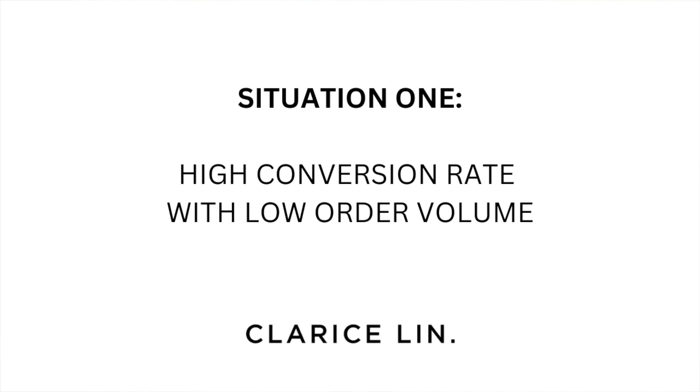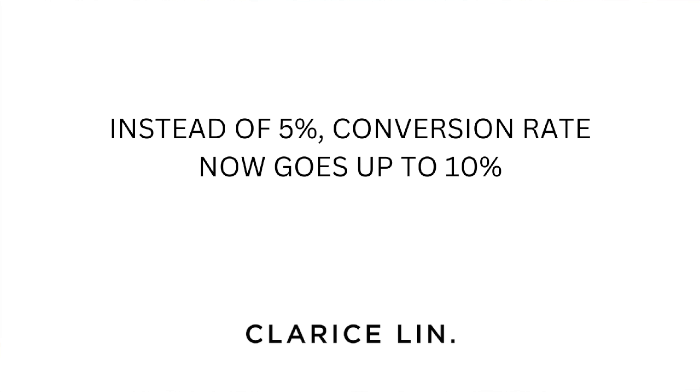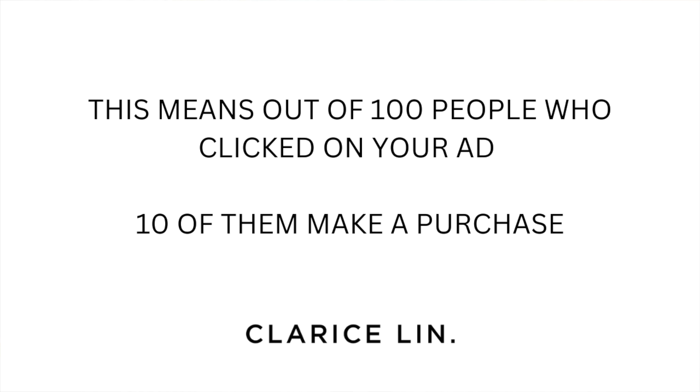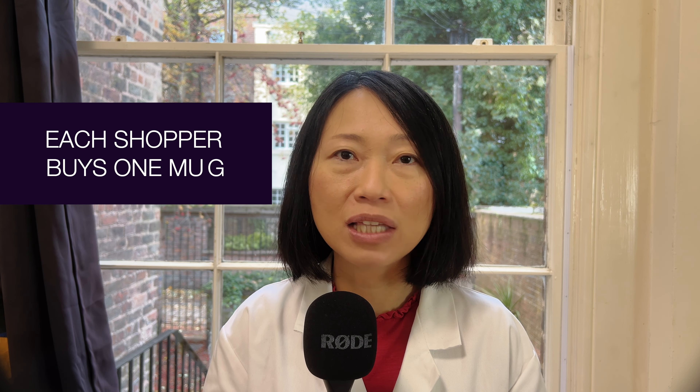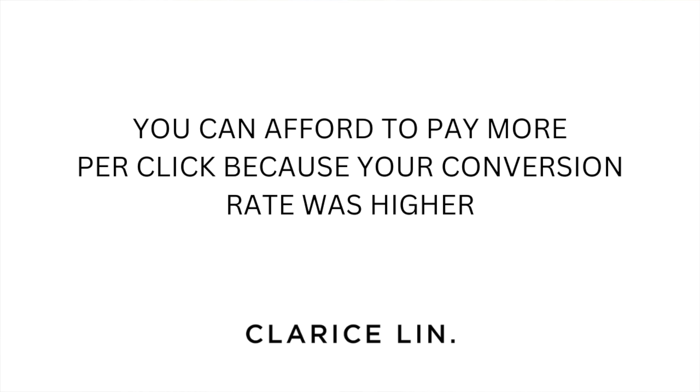Let's look at a more complex example, looking at two different situations that might happen with your business if you're running ads. Situation one: high conversion rate with low order volume. Let's say your conversion rate improves — now 10% of people who click on your ad make a purchase, but each customer only buys one mug. The math: 10 sales times $10 profit per sale equals $100 profit. It still took 100 clicks to get those 10 sales, so maximum bid per click equals $100 divided by 100 clicks, which is $1 per click. Because more people are buying, you can afford to bid up to $1 per click.